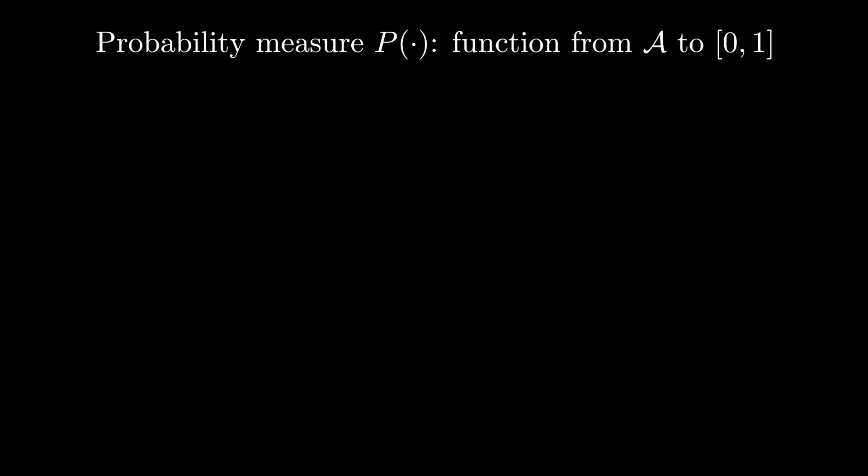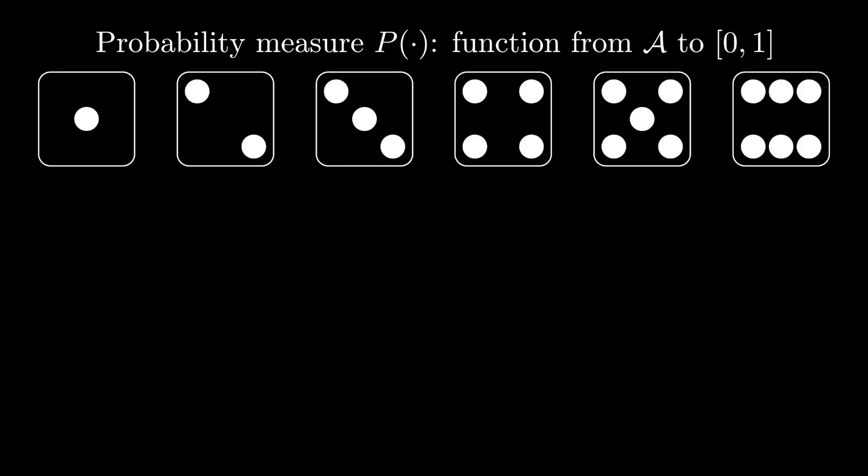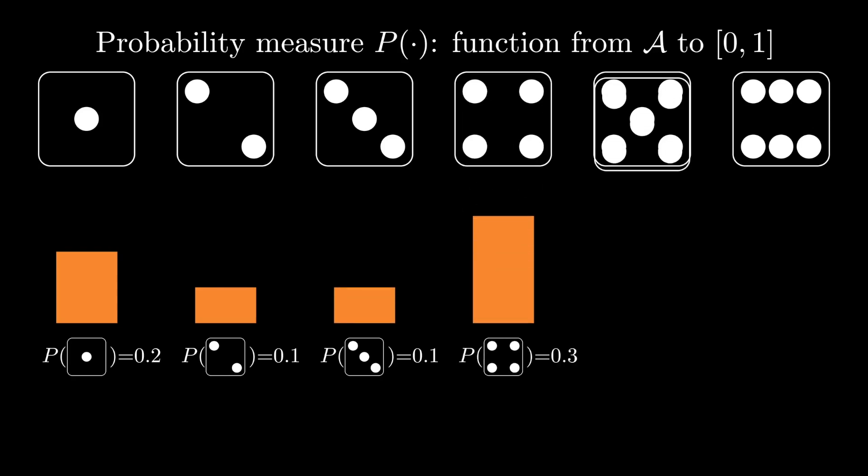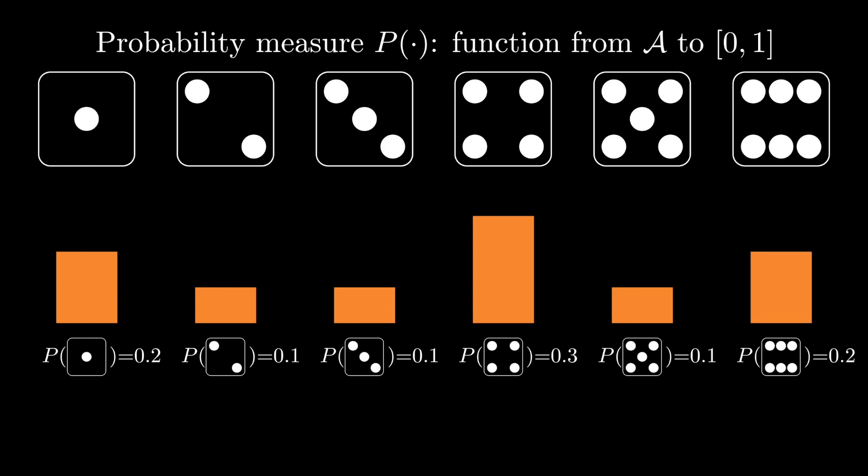Now for a finite sample space, it's pretty typical to take the event space to be the power set of the sample space. That is the set of all subsets of omega. Then we can specify the probability measure completely just by assigning a probability to each of the members of omega. That's the thing we usually call the probability mass function. And of course it has the property that if we sum the probability associated with each member of omega, then we get 1.